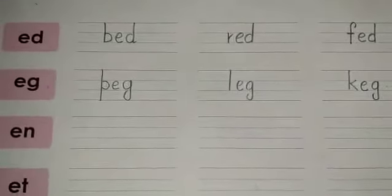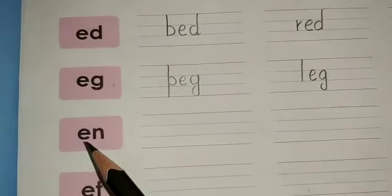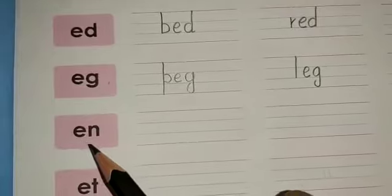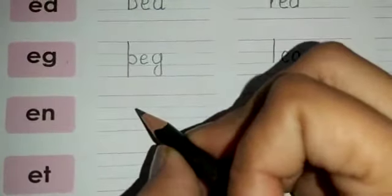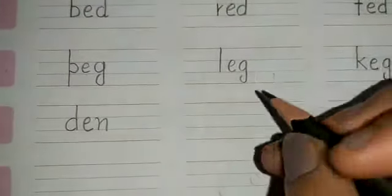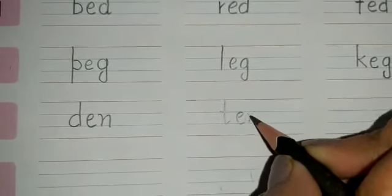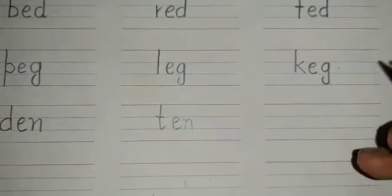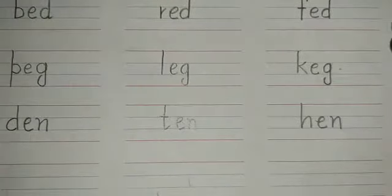Moving on to the next cluster — E-N. Tell me three words from the E-N cluster quickly. The first word is den, D-E-N, den. The next word is ten, T-E-N, ten. And the next word is hen, H-E-N, hen.